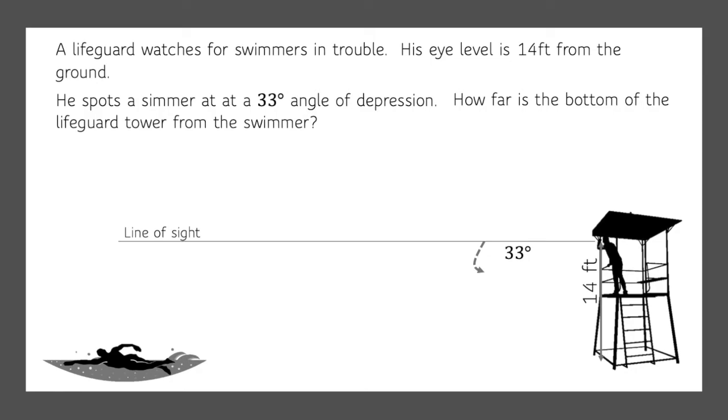How far is the bottom of the lifeguard tower from the swimmer? So we can bring in our triangle and we're looking for the distance from the tower to the swimmer. Here we have our angle of depression is 33 degrees. The problem is that angle is not inside of our triangle.